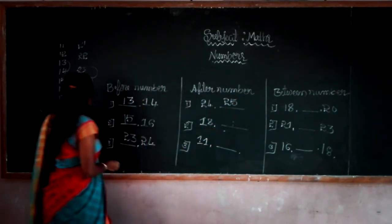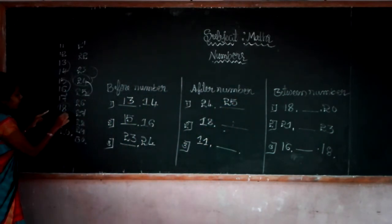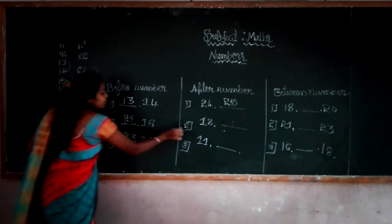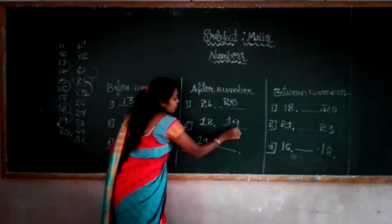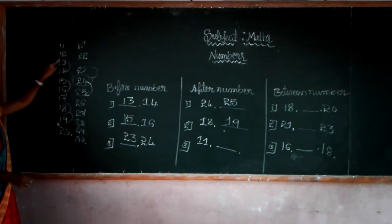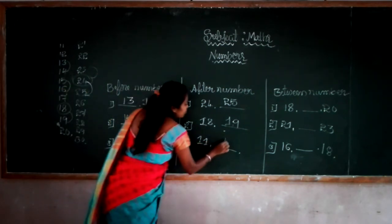After number 18 is? Here is 18 — the after number of 18 is 19. Then after number 11 — here is 11 — the after number of 11 is 12.